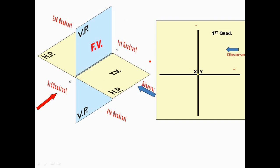The observer can view any object from the direction of the first, second, third, or fourth quadrant. The position of the object determines its quadrant. The first quadrant is above HP and in front of VP. The second quadrant is above HP and behind VP. The third quadrant is below HP and behind VP. The fourth quadrant is below HP and in front of VP.